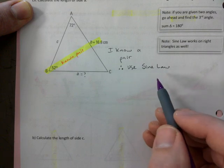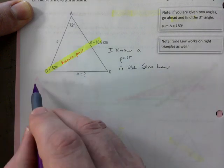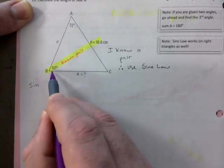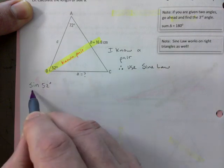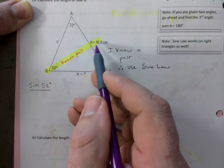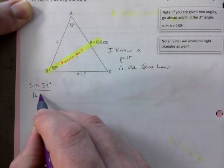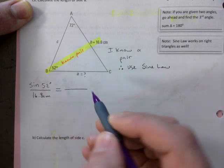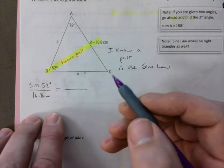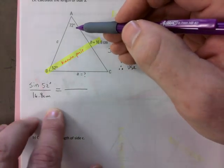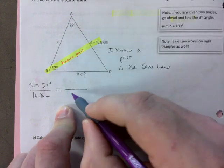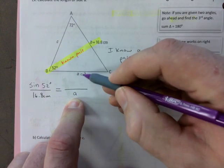So I know a pair. Therefore, the three dots mean therefore, use sine law. The province usually gives you one mark by just picking the right law to use. So sine law. So this is how we start. I always start with my known pair. Watch this. Sine of 52 degrees over the side length across from it, which is 16.8 centimeters in this case. Is equal to. And here you have to do a little bit of thinking. It's not quite always this straightforward. This example is straightforward.